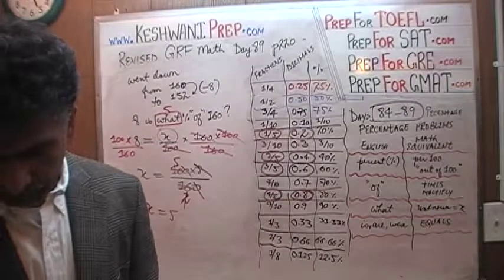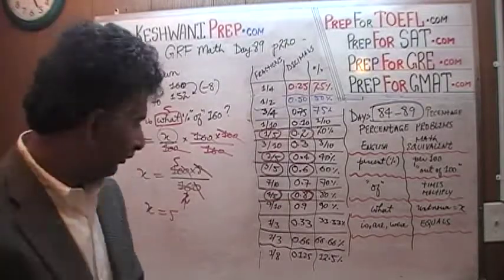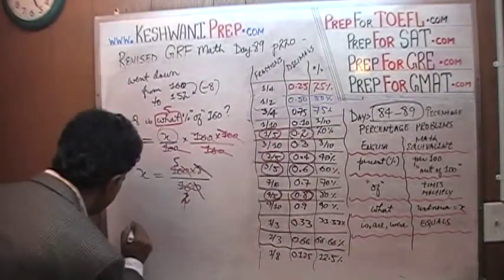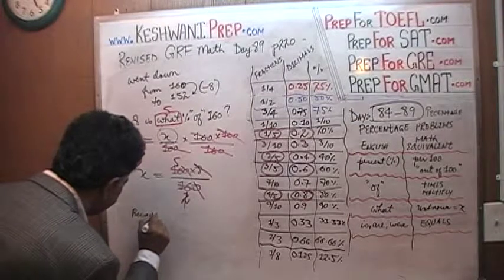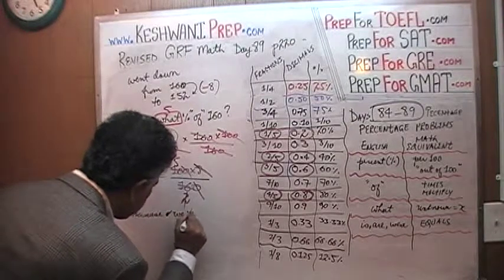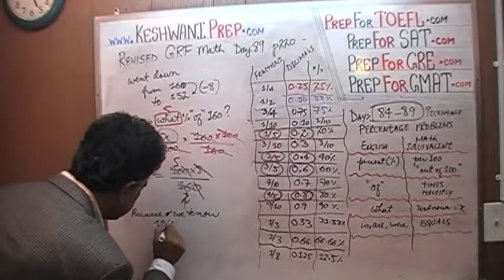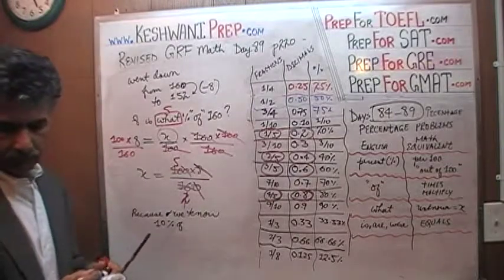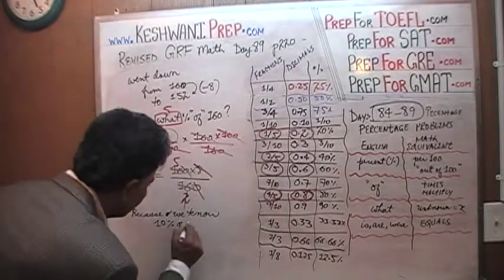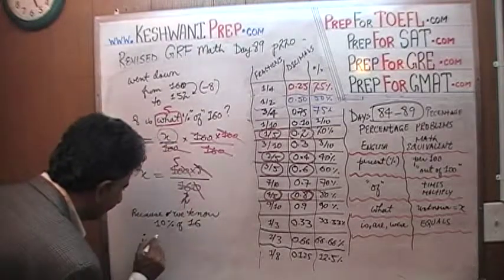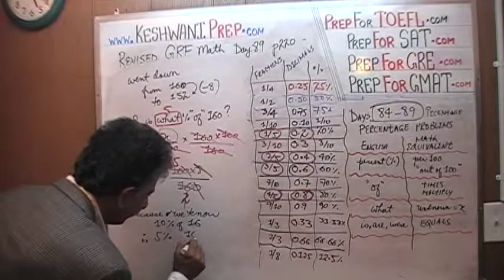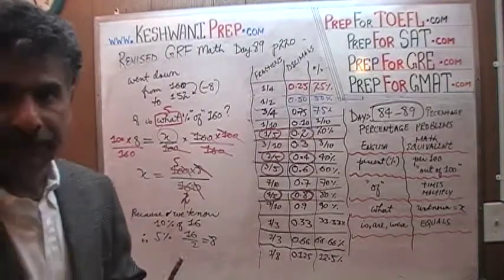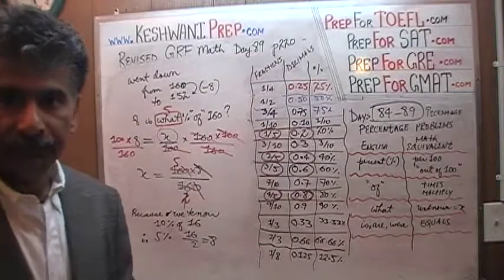8 is 5% of 160. And if you think about it, it makes sense — because 10% of 160 is 16, therefore 5% would have to be half of 16, which is 8. That's it. That's all for today. I will see you tomorrow. Bye now.